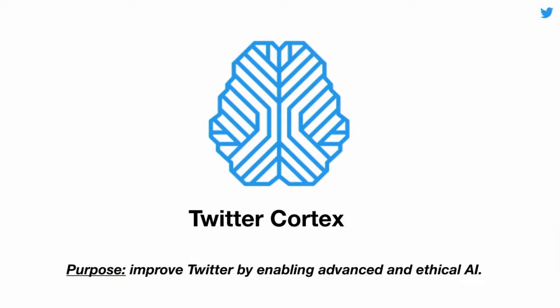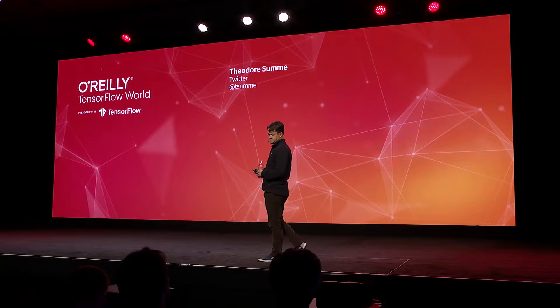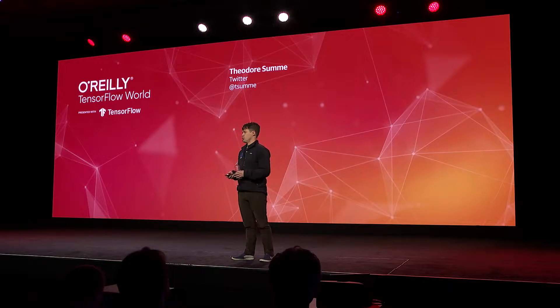As you can tell, machine learning is a big part of all of these organizations today. Where we have shared interests and shared investment, we want to make sure we have a shared organization that serves that — and that's the need for Cortex. Cortex is Twitter's central machine learning team, and our purpose is quite simple: to enable Twitter with ethical and advanced AI. To serve that purpose, we've organized in three ways. The first is our applied research group, which applies the most advanced ML techniques from industry and research to our most important surface areas, acting like an internal task force or consultancy redeployed against the company's top initiatives.